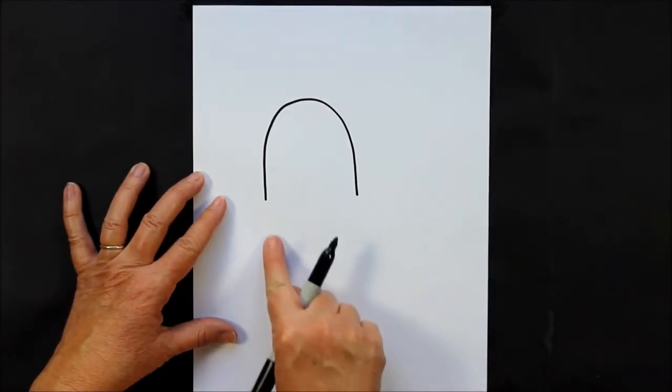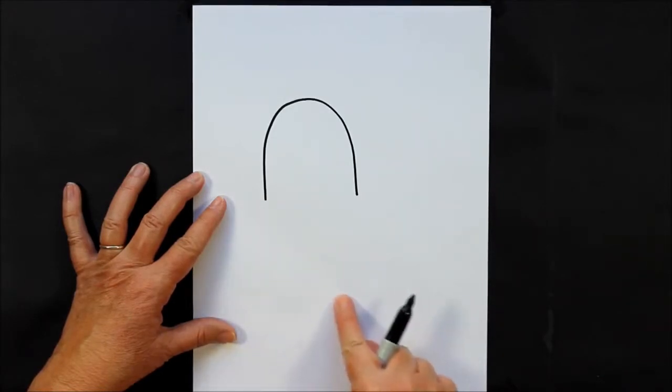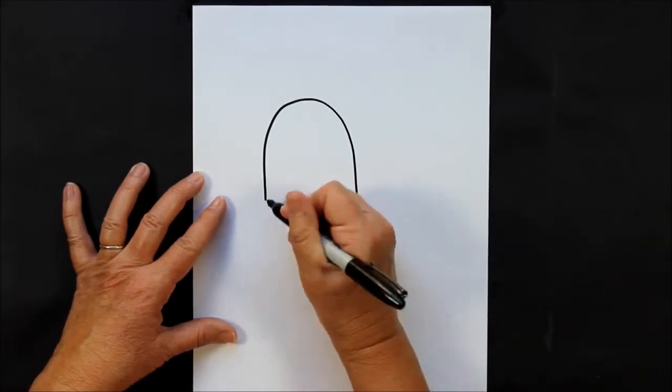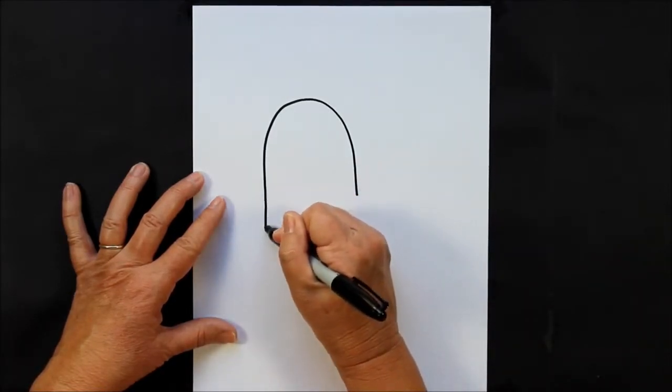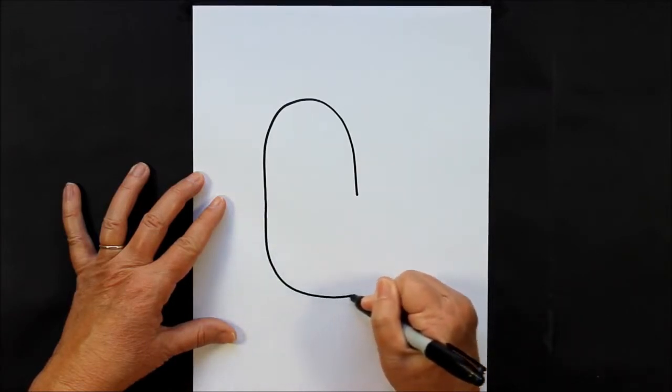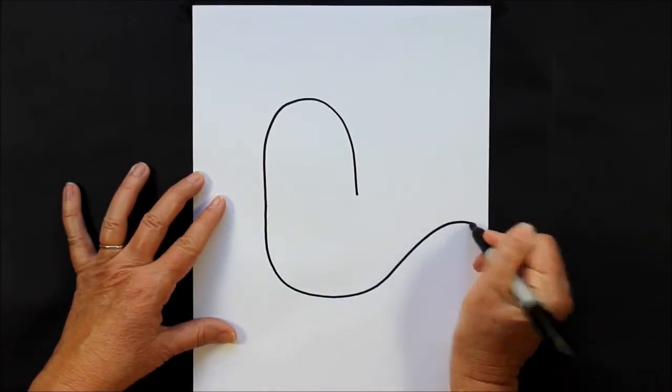Now this part is pretty tricky because we need to have a curved line that comes down and then comes back up. Watch what I do first, and you might need to practice this a little. You come down and then you come back up to a point, just like that.